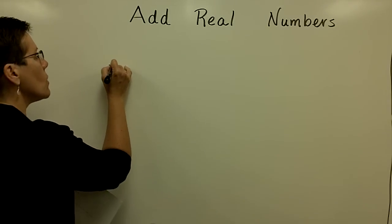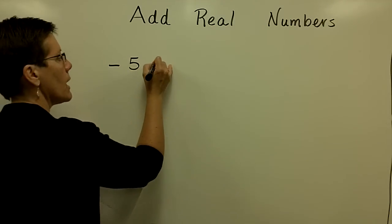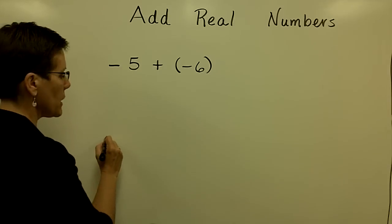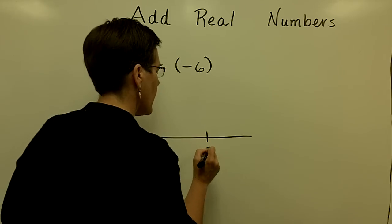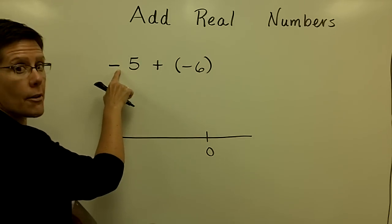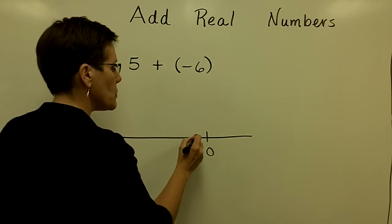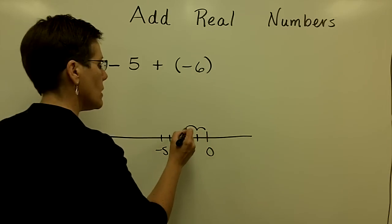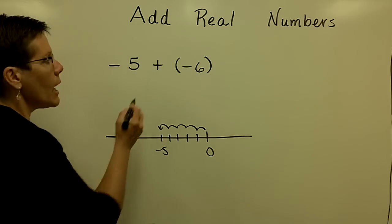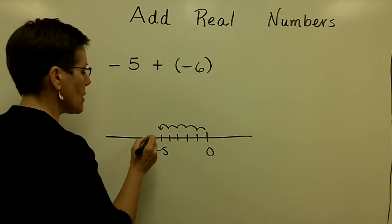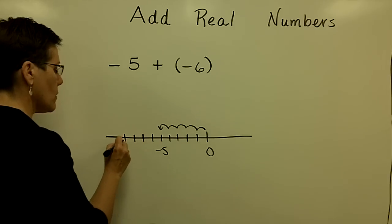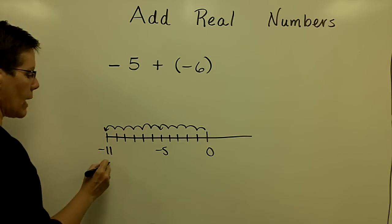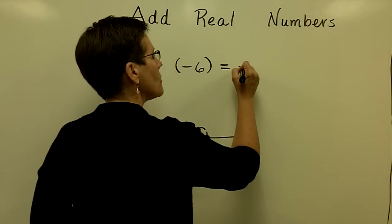Here's an example problem. I may show a number line as well. If I wanted to take negative 5 and add to that a negative 6, many people will illustrate this initially on a number line. Starting at 0, I would go to the left by 5 units because I want to go negative. Then I want to add a negative 6, so I go to the left 6 more units — 1, 2, 3, 4, 5, 6 more units — and I will land at negative 11.